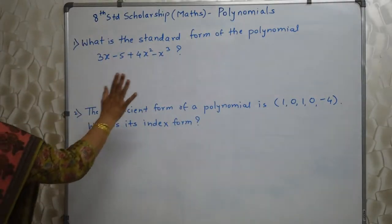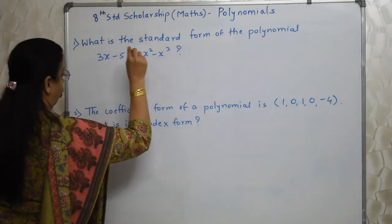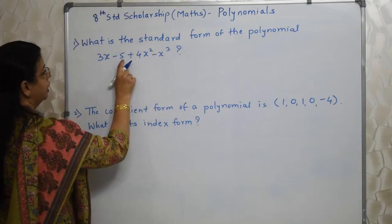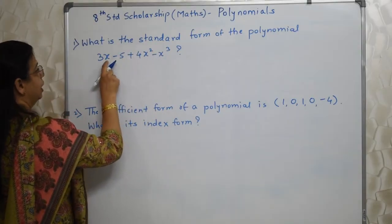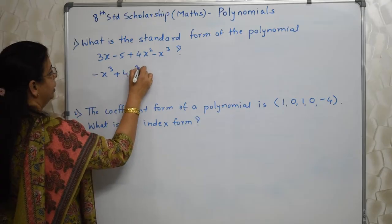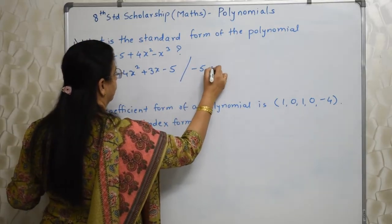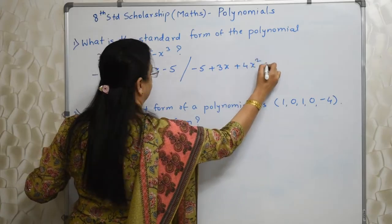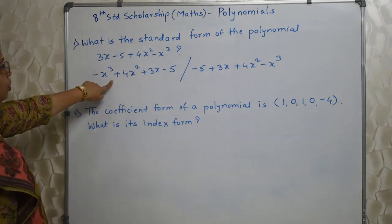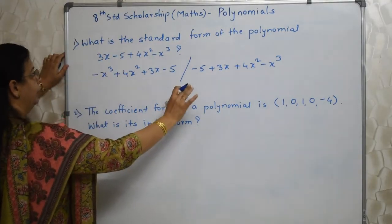What is the standard form of a polynomial? The standard form of a polynomial depends on the index of its terms. So we start with the highest index — this has 3, this has 2, this has x raised to 0, and this is x raised to 1. We can write the standard form in descending order or ascending order. The only thing is it must be in order — ascending or descending.